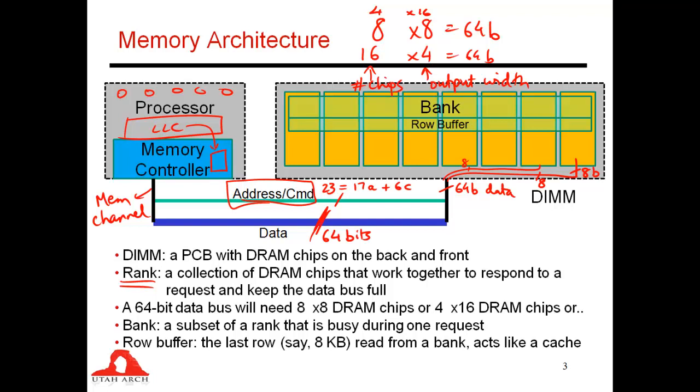So within a rank itself, I can have what are called multiple banks. So that's the next term I'm going to introduce. In this example, what I've shown you here is that in one DRAM chip, in this one orange box which is one DRAM chip, I have one of these boxes which is called a bank. And in this case, I've drawn the bank large enough that I can only accommodate two banks in one DRAM chip.